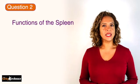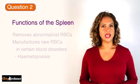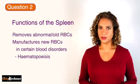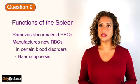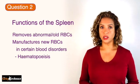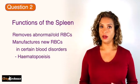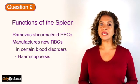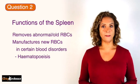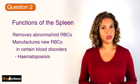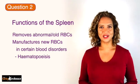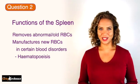The spleen also removes abnormal red blood cells or old red blood cells. And in some blood disorders such as leukemia or sickle cell disease, the spleen can be a site for manufacturing new blood cells, which is a process known as hematopoiesis.